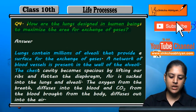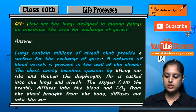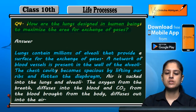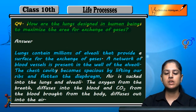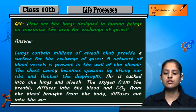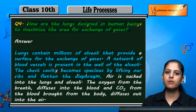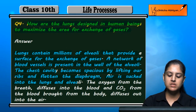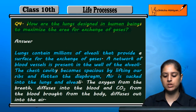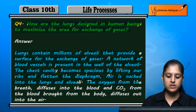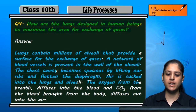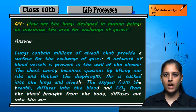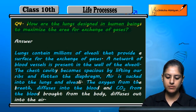The chest cavity becomes spacious by lifting our ribs and flattening the diaphragm. As we breathe, our chest cavity rises a little and diaphragm becomes flat. The air is drawn into the lungs and alveoli. The oxygen which we inhale is diffused into the blood and carbon dioxide is released out of the body.